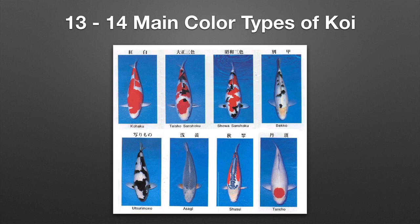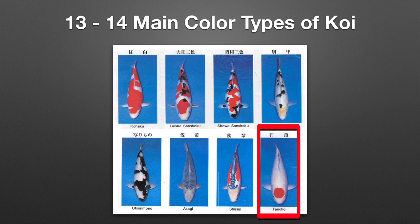Also a very popular color type of koi is Tancho. This fish should have one round spot of red on the forehead, and importantly, no other red marks should be on the body, because this is actually similar to the Japanese national flag — the rising sun.